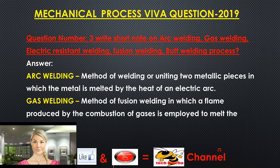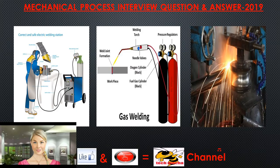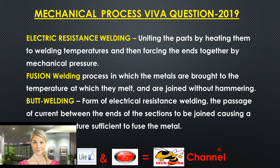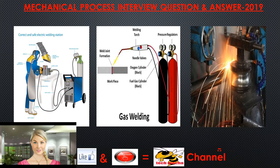Electric resistance welding unites the parts by heating them to welding temperatures and then forcing the ends together by mechanical pressure. Fusion welding is a process in which the metals are brought to the temperature at which they melt and are joined without hammering. Butt welding is a form of electrical resistance welding where the passage of current between the ends of the sections to be joined causes a rise in temperature sufficient to fuse the metal.